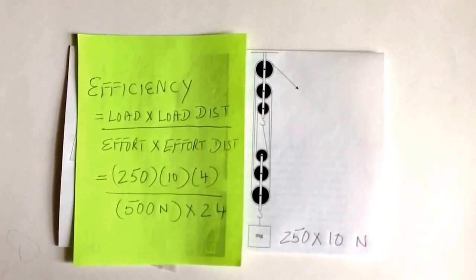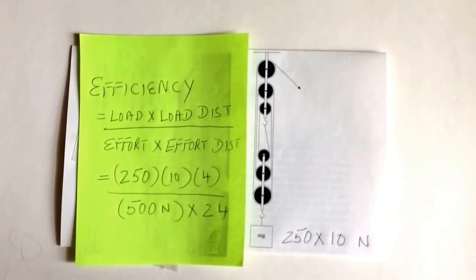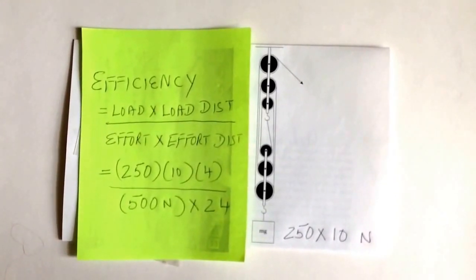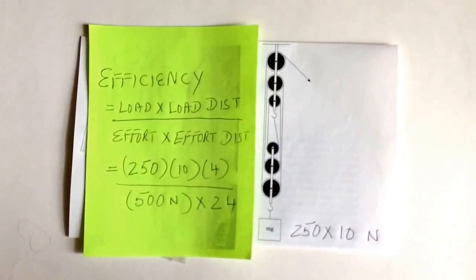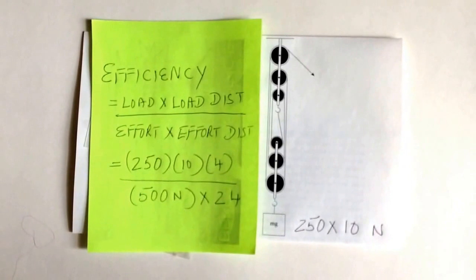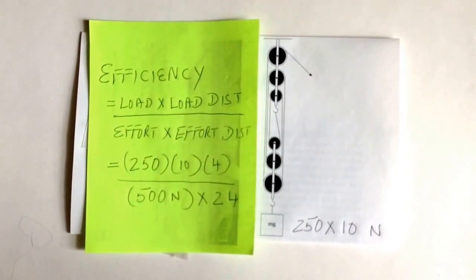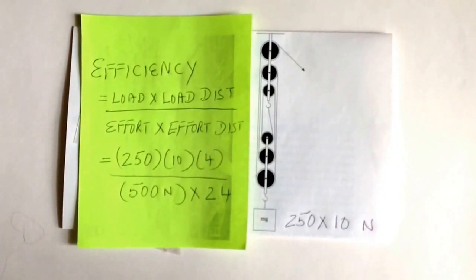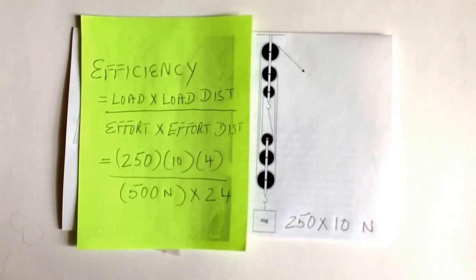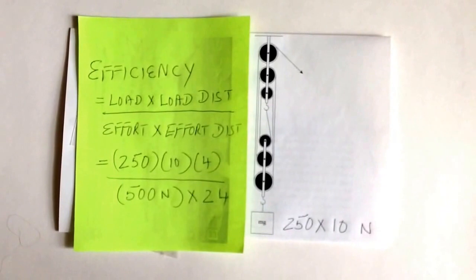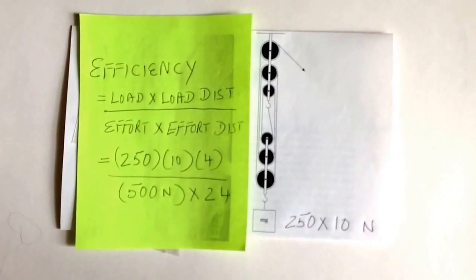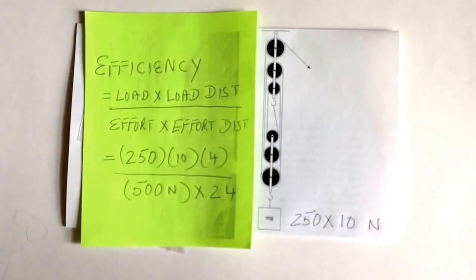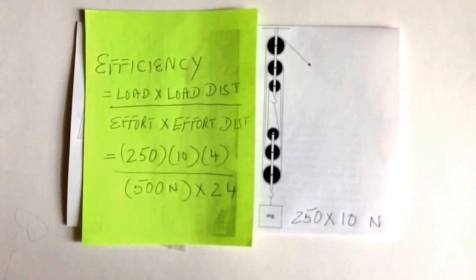The definition of efficiency is the load times the load distance, divided by the effort times the effort distance. The load is 2500 Newtons. The distance is 4 meters, as the load was moved up 4 meters. The effort is 500 Newtons, but the effort requires the rope to be pulled 24 meters. So we have the equation and doing the calculations, you will find that the efficiency of the system is 83%.